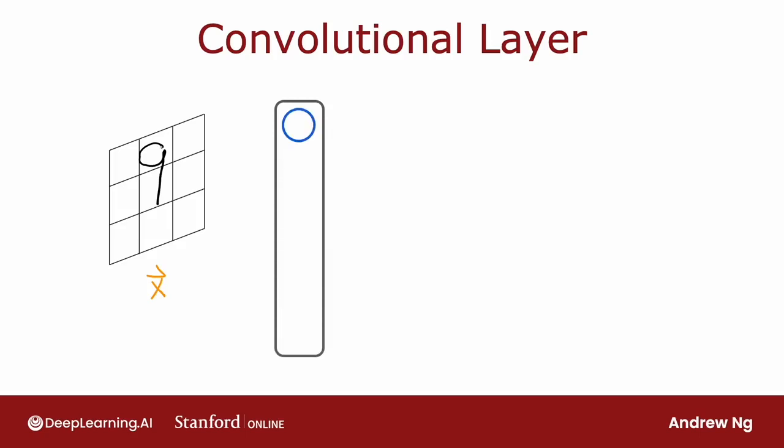But here's something I can do. For the first hidden unit, which I've drawn in blue, rather than saying this neuron can look at all the pixels in this image, I might say this neuron can only look at the pixels in this little rectangular region. The second neuron, which I'm going to illustrate in magenta, is also not going to look at the entire input image x. Instead, it's only going to look at the pixels in a limited region of the image.